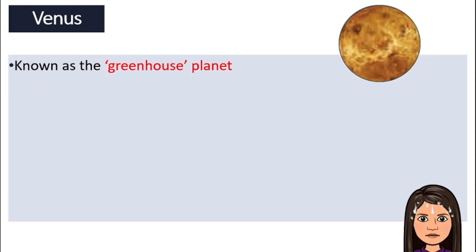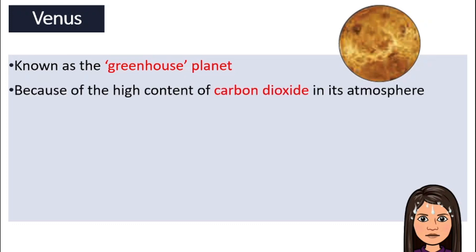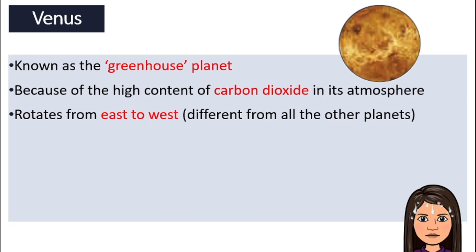Now let's move on to Venus. Venus is also known as the greenhouse planet — that is a nickname for Venus. It does have an atmosphere, but the content of the atmosphere has more than 96% carbon dioxide. So we have a very high content of carbon dioxide, and that causes this planet to have a lot of greenhouse effect. That is why we call it the greenhouse planet.